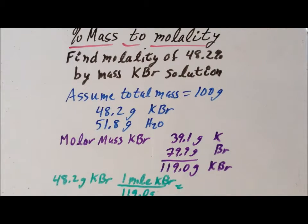And we know that if we multiply through, the units of grams will cancel and we'll be left with an answer in terms of the number of moles of KBR. So this tells us that we have 0.405 moles of our potassium bromide KBR.